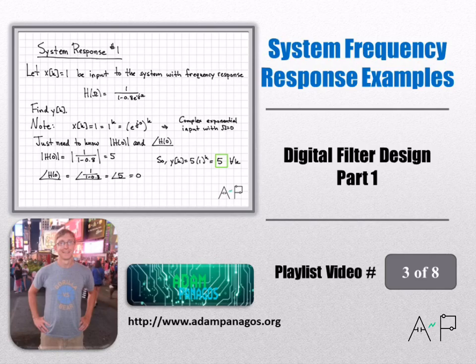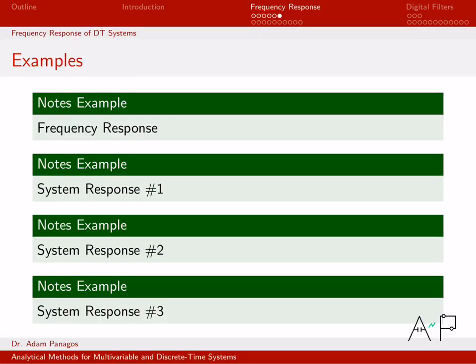Alright, so now let's work a few examples where we know the frequency response of the system. We're going to work with the same frequency response that we computed in the last video, but now see what happens when different inputs are put into the system. In this video, we're actually going to work through all three of these system response examples.